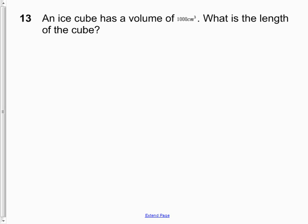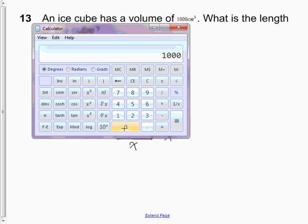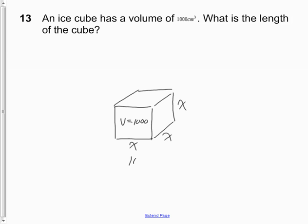Question 13: a cube has a volume of 1,000 cubic centimeters. We know volume equals x times x times x, so what number multiplied by itself three times gives 1,000? Using the cube root function on a calculator — the cube root of 1,000 is 10. That means 10 times 10 times 10 equals 1,000. Therefore, the edge length of the cube must be 10 centimeters.